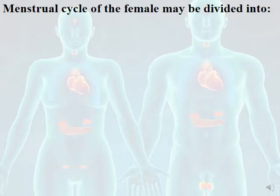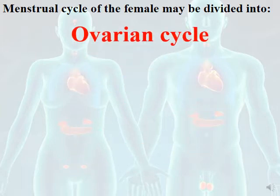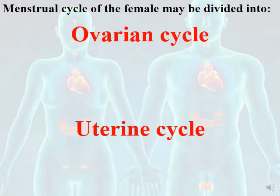First of all, you have to know that the female cycle is divided into two parts. The first one is called the ovarian cycle, and the second one is called the uterine cycle.